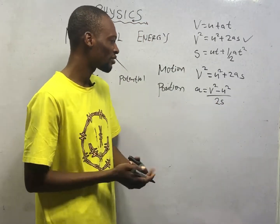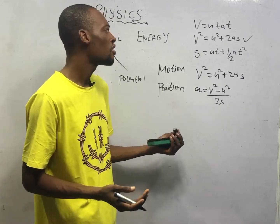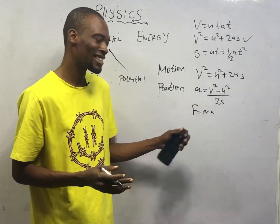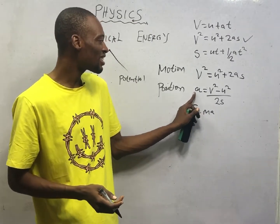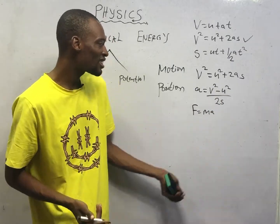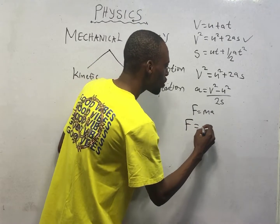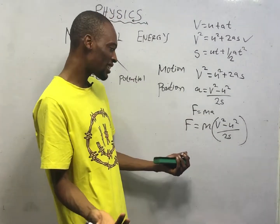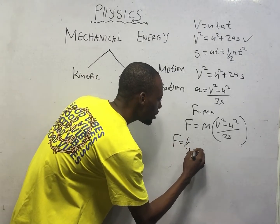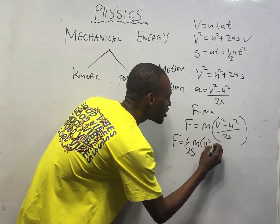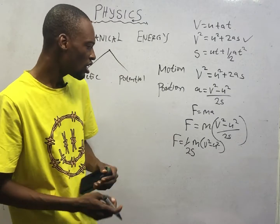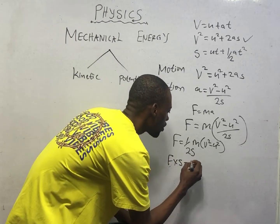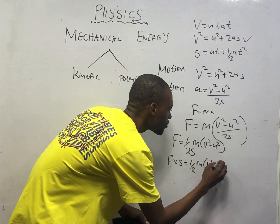From Newton's second law, force equals MA — force is mass times acceleration. If force is mass times acceleration, and acceleration equals (V² − U²) / 2S, it simply means that force equals mass times (V² − U²) / 2S. You can rewrite this as: force equals (1/2S) × M × (V² − U²). If you cross multiply, you get force times distance equals ½M(V² − U²).